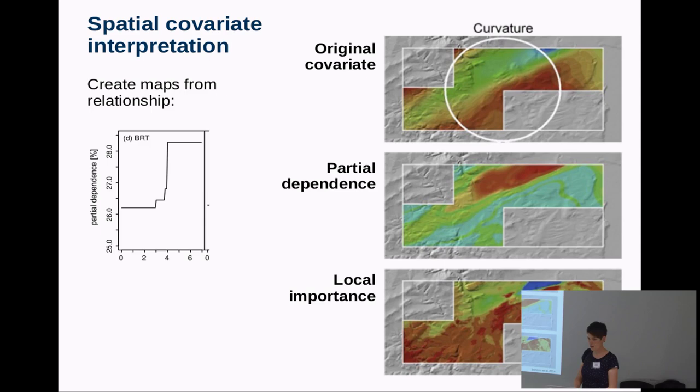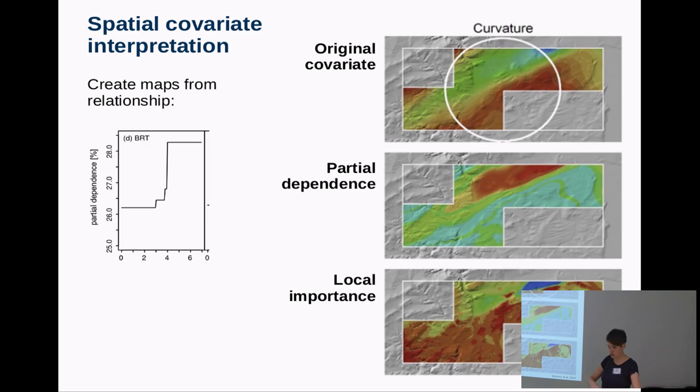It's like the feature importance diagram we have seen before — it's a relative value so you can see that, relatively, in the south versus north it's more important. I've not dug into it too much; I just wanted to show that you can go even further if this is important for you.